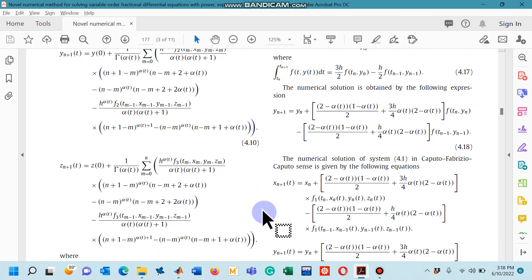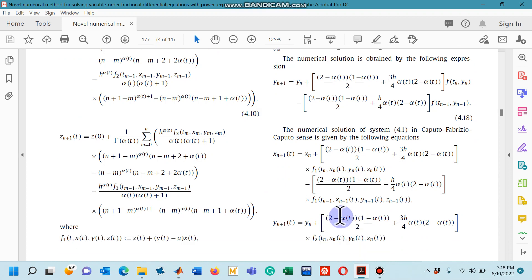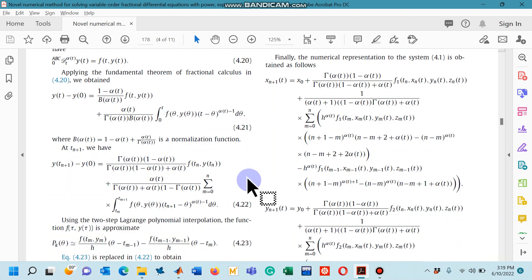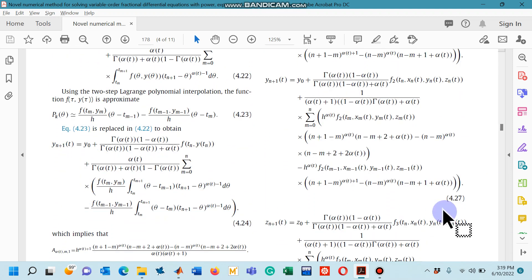This is the numerical scheme with the variable order is 4.19. Finally, Atangana-Baleanu-Caputo fractional differential operator with variable order is presented by equation 4.27 and it has three equations.